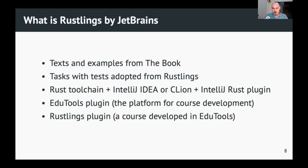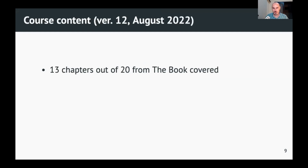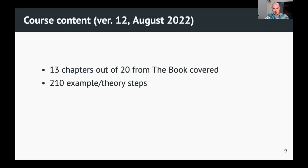We made a new release of this course this August. It's not a new course, but we've revised it very significantly. It covers 13 chapters out of 20, so not all of them, but a significant part. We have 210 theory steps — each one is a small part of theory paired with an example. 210 examples like that — it's quite a lot, but it's all about small chunks.